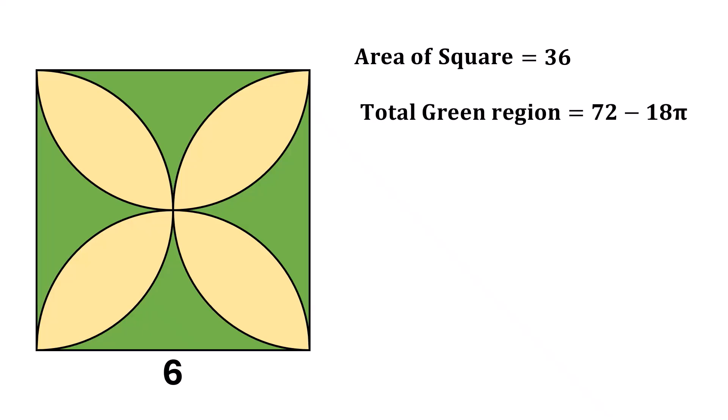Finally, the area of this yellow region is area of the square minus the total green region. So, the area of the yellow region is 36 minus 72 minus 18 pi,